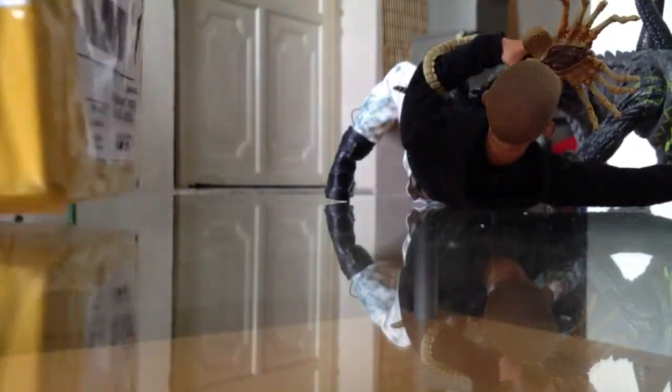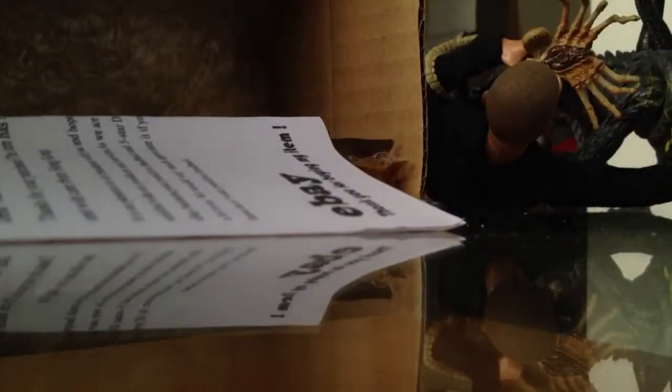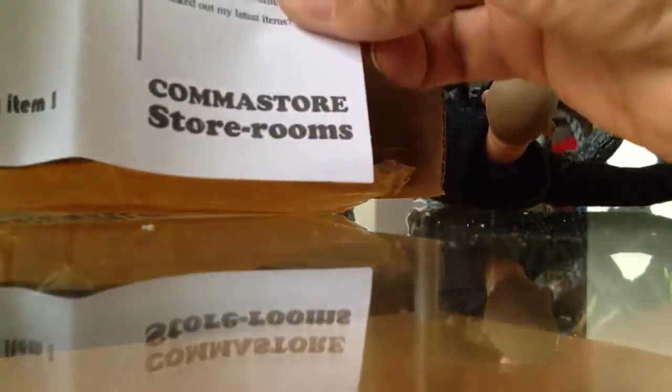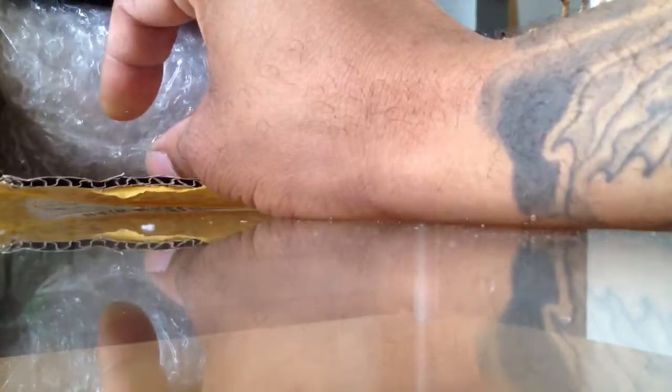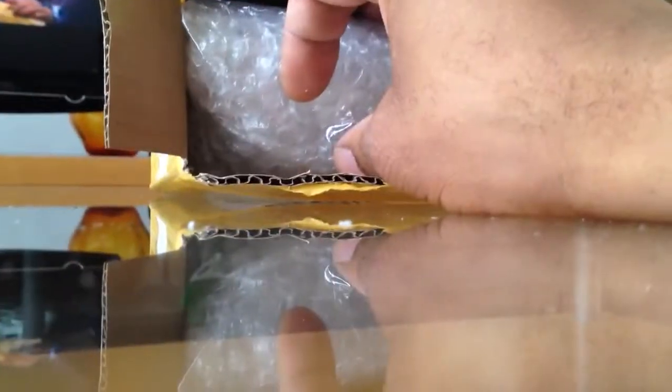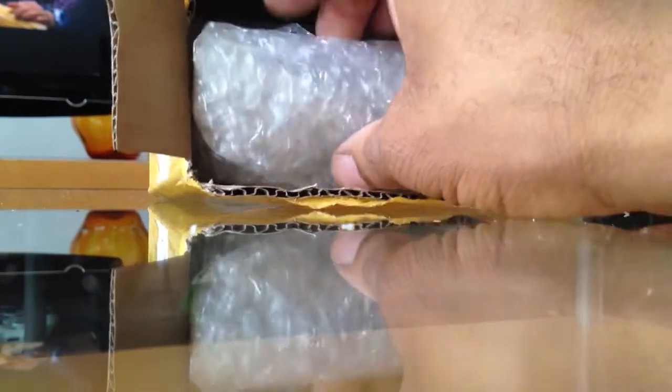As you can see I got the styrofoam right there to protect, so the seller packed it pretty well. I think I got this from a seller called Store Rooms on eBay. Here's the little slip right here. There we go, Store Rooms right there, as you can see. Took about three weeks and some time for this stuff to come. So you have to be prepared when you're ordering from an eBay seller from Hong Kong that it may take forever.